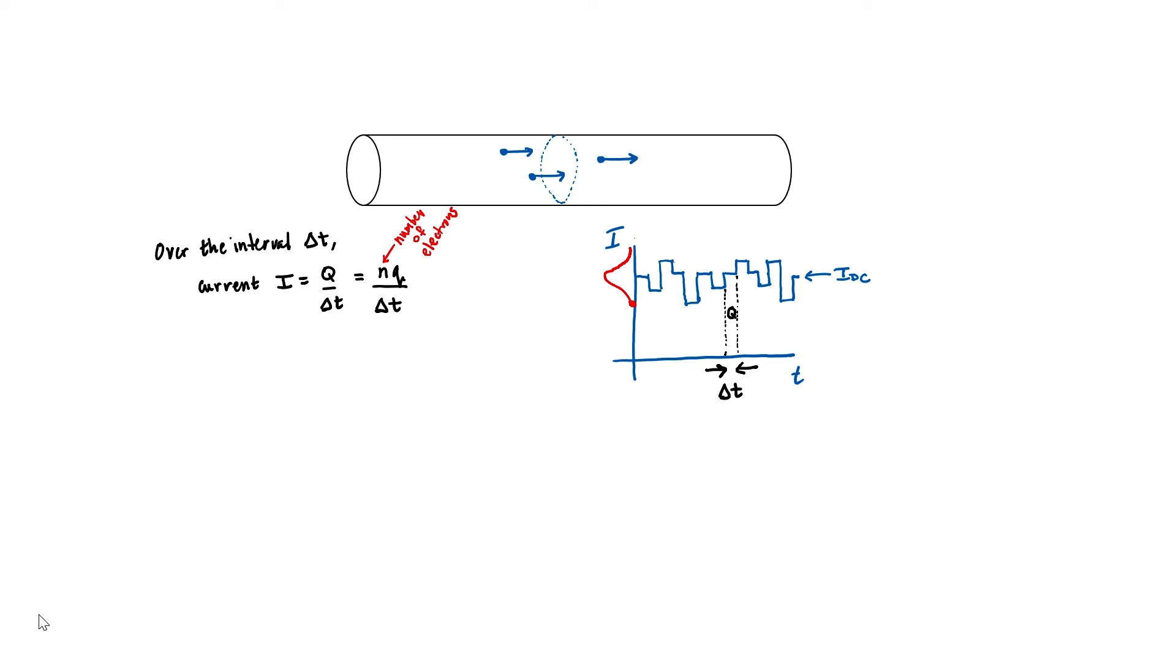We're going to be interested in knowing what the RMS current is due to the noise, or what the expected value of that current is going to be. We're interested here in knowing what the expected value of the current is. Because the elementary charge Q is constant, and if we keep our measurement interval delta T constant as well, then the expected value of the current should be proportional to the expected value of N.